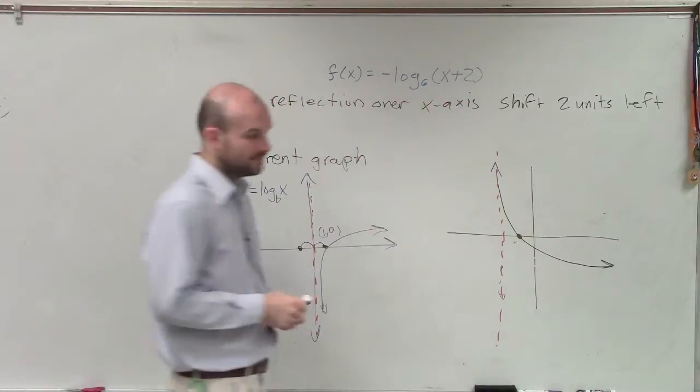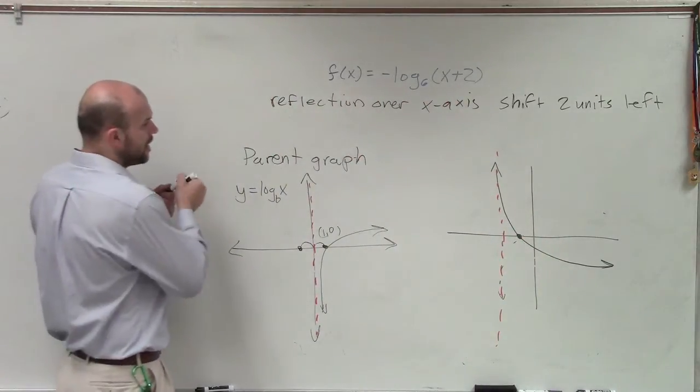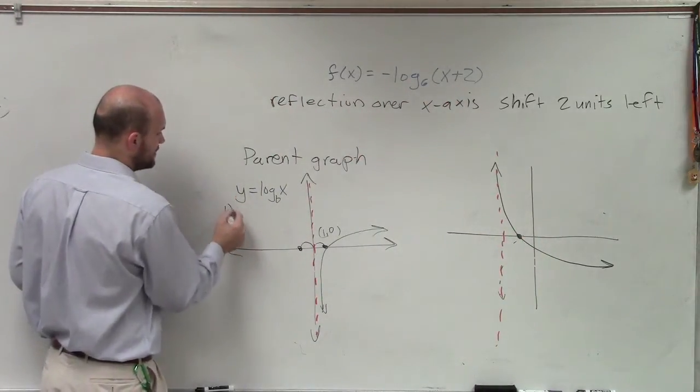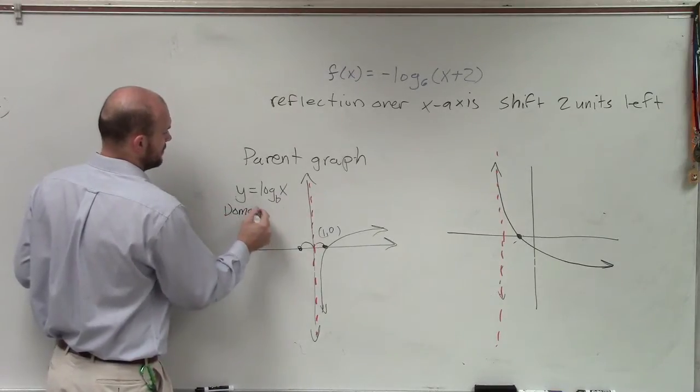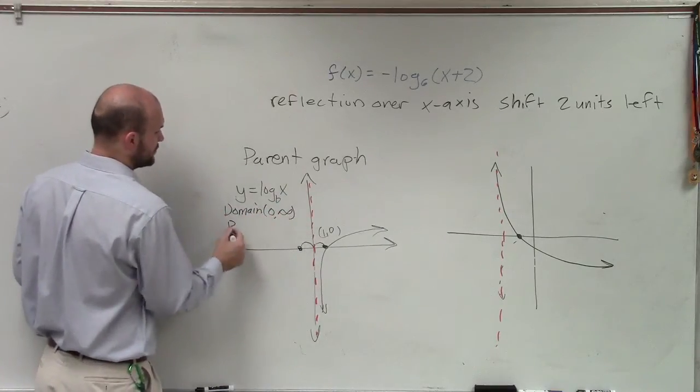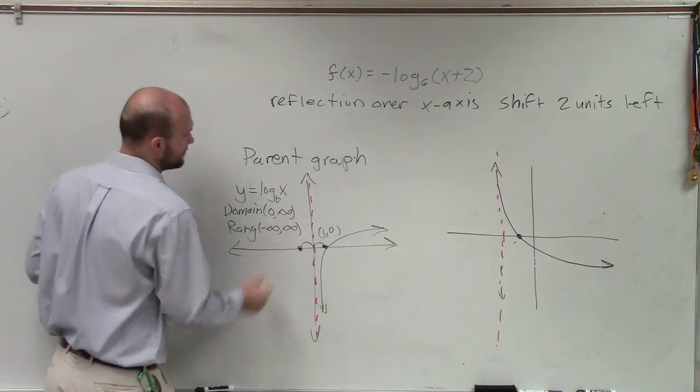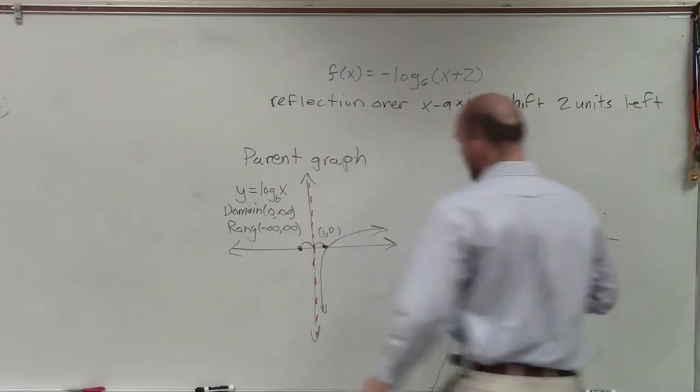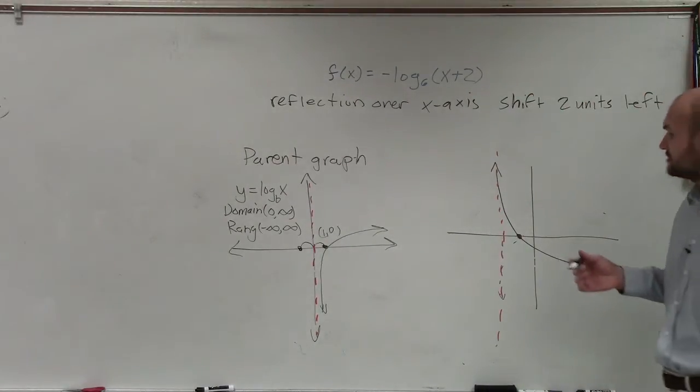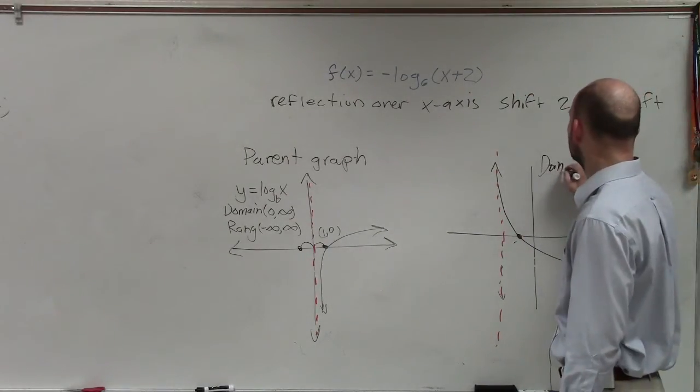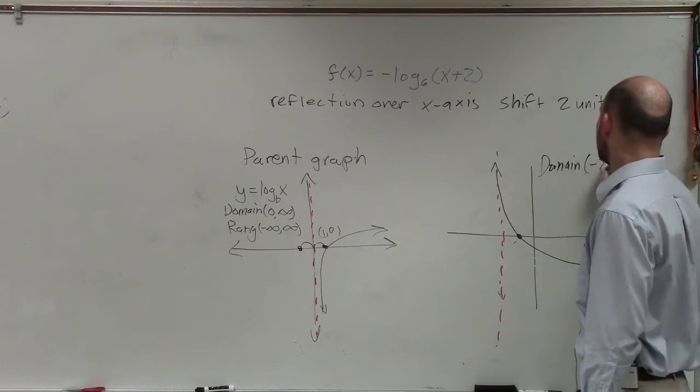So now let's go ahead and write in what the domain and range is. For our parent graph, we know the domain is from 0 to infinity, where the range is from negative infinity to infinity. Well, over here, now the farthest left that my graph is going to go is negative 2. So my domain is at negative 2 to infinity.